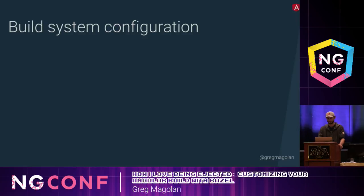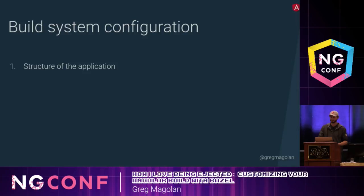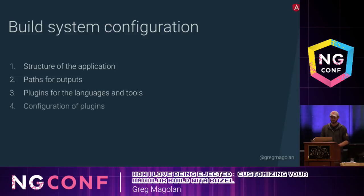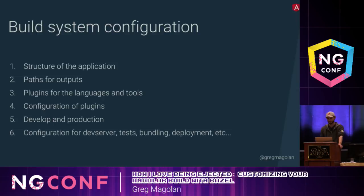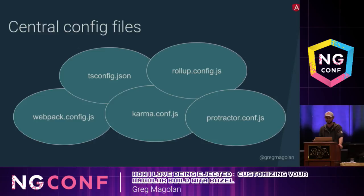So what makes up a build configuration like the webpack config that you just saw? First, you need to tell your configuration what the structure of your application is — meaning the input files and where they're located. The configuration also needs to know what the paths are for the output files, and what plugins to use for the languages and tools you're using. The plugins themselves need some configuration. You also need separate configuration for your development and production builds, and for things like the dev server, running your tests, bundling your application, and deployment. All of this can add up to a lot of configuration to maintain.